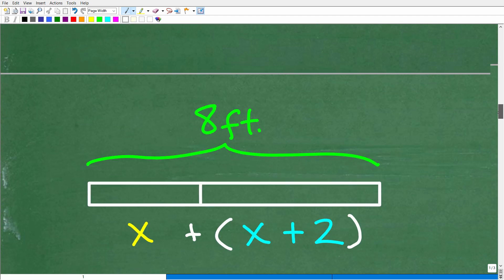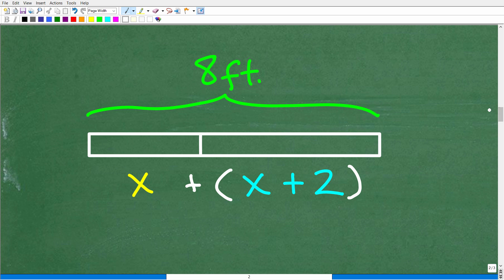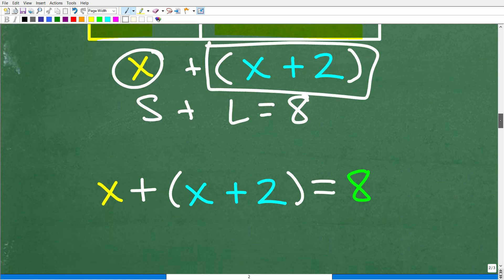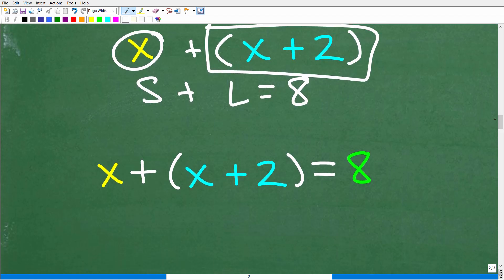Hopefully, you're like, hey, Mr. YouTube Math man, this is easy because here, if we take the short side and we add it to the long side, the total, right, the short side plus the long side is the total length of the board, and we know that that's 8 feet. So this plus this is equal to 8. All right, so that is the equation that we're going to set up, and now we can solve for X.